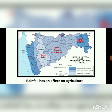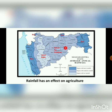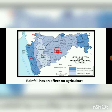Nagpur, Chandrapur, Gadchiroli, and Gondiya are areas that receive heavy rainfall, and rice is grown in these areas — confirming that rice needs heavy rainfall. Moving to the next zone, areas shown in the moderate-rainfall color receive rainfall that is not very heavy and not very low.